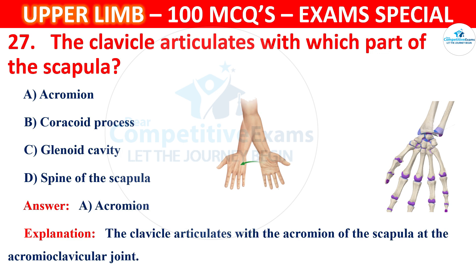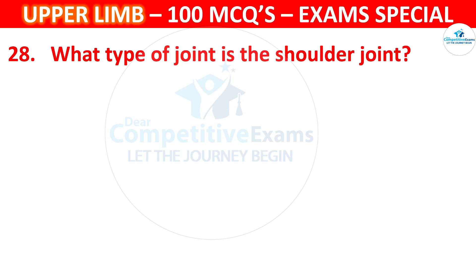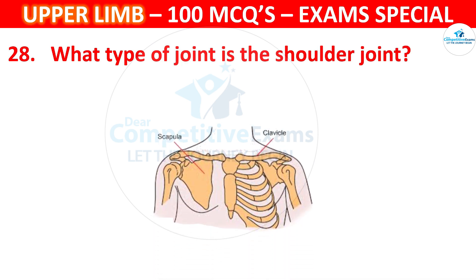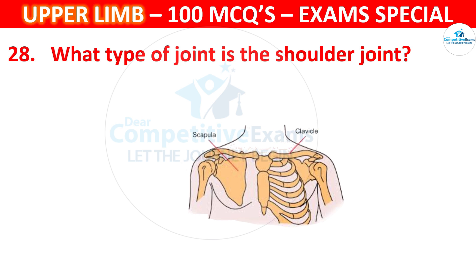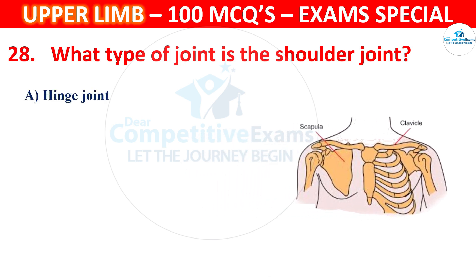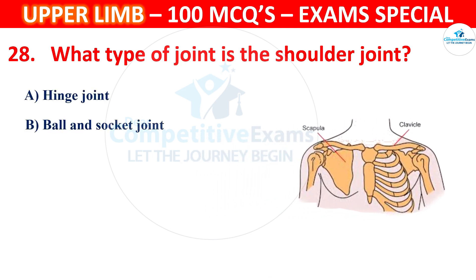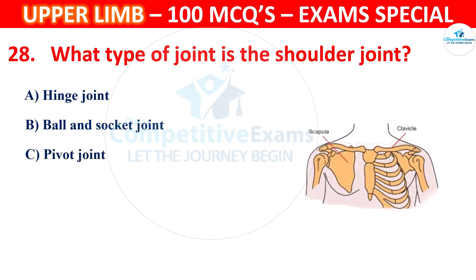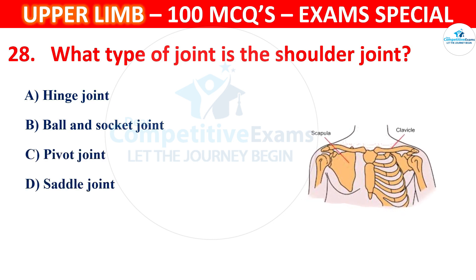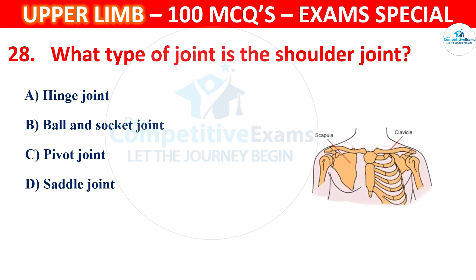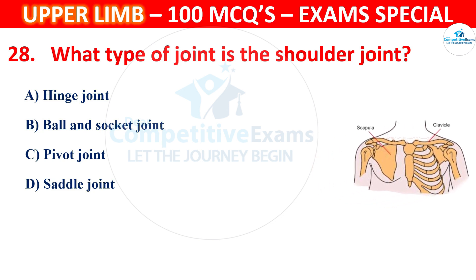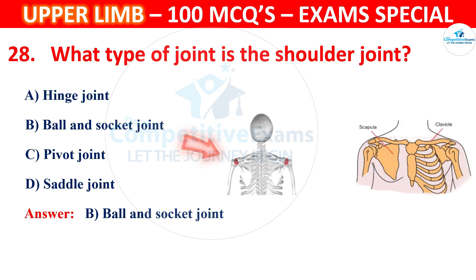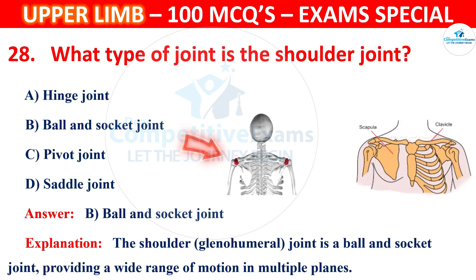Question number 28: What type of joint is the shoulder joint? Options: hinge joint, ball and socket joint, pivot joint, or saddle joint. The correct answer is B, ball and socket joint. The shoulder joint is a ball and socket joint providing a wide range of motion in multiple planes.